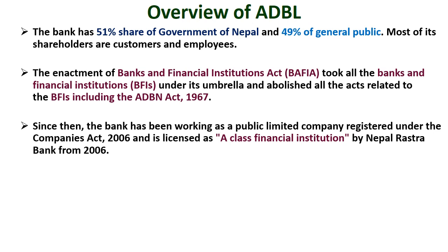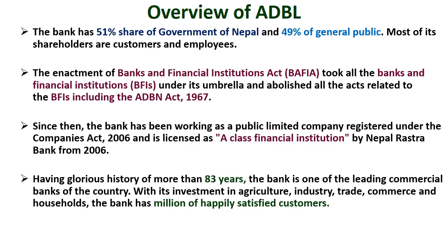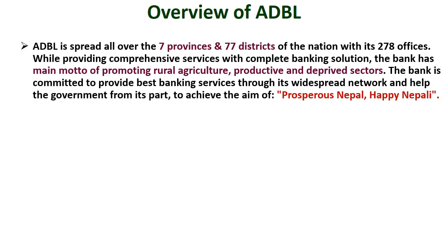Since then, the bank has been working as a public limited company registered under the Companies Act 2006, and is licensed as a Class A financial institution by Nepal Rastra Bank from 2006. Having a glorious history of more than 83 years, the bank is one of the leading commercial banks of the country. ADBN is spread all over the seven provinces and 77 districts of the nation with its 278 offices.